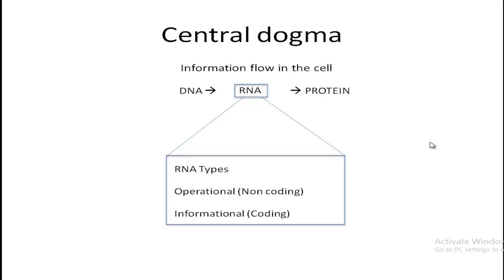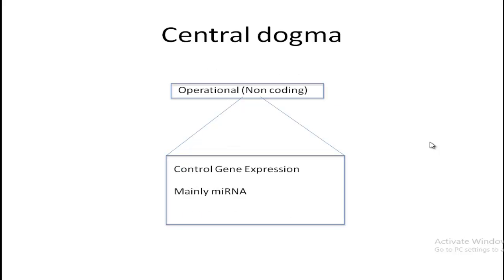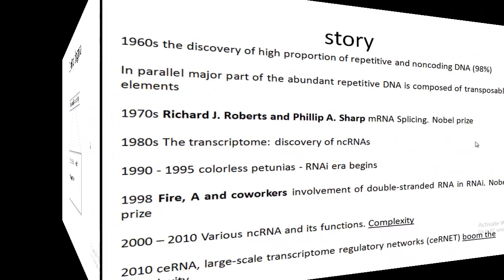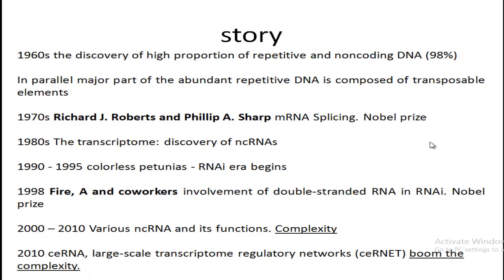Operational and informational RNA are fancy terms for non-coding and coding RNAs respectively. We are going to appreciate the post-transcriptional gene silencing strategies by these non-coding RNAs. These non-coding RNAs control gene expression post-transcriptionally — that is, after the mRNA is synthesized in a cell. In these processes, mainly micro RNA is involved.